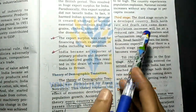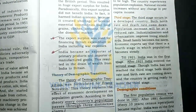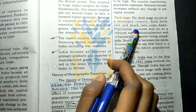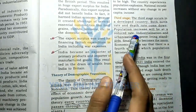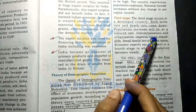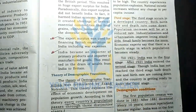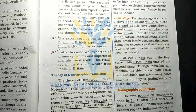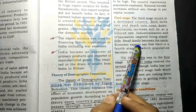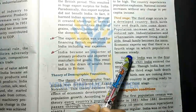The third stage is the developed economy, and the growth rate will be low. Economic experts say that there is a fourth stage in which the population becomes steady.